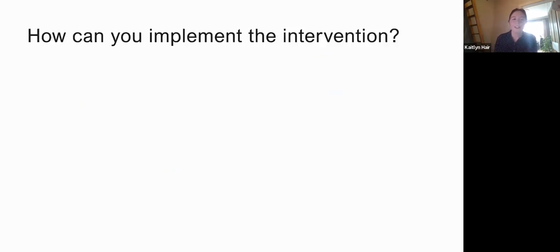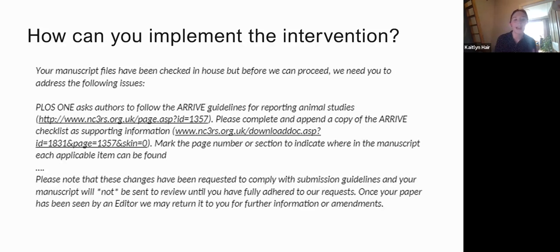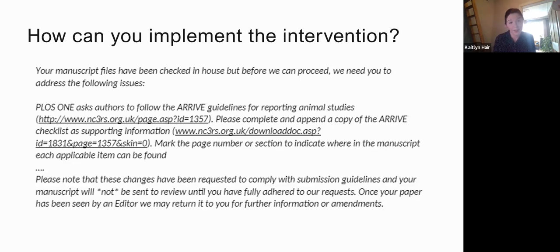It took a lot of time to operationalize this into something measurable. Think about what your data will look like at the end and what you can actually do with it. Also consider that implementing an intervention feasibly might be more difficult than you think. We wanted to mandate ARRIVE checklist completion, but what actually happened was that PLOS ONE sent authors in the intervention group an email asking them to attach an ARRIVE checklist and mark the page number where each item could be found.